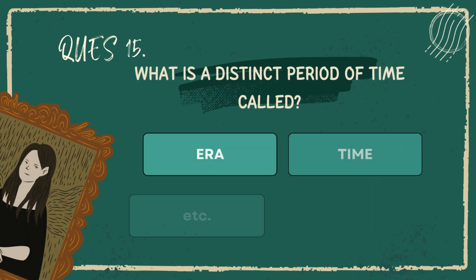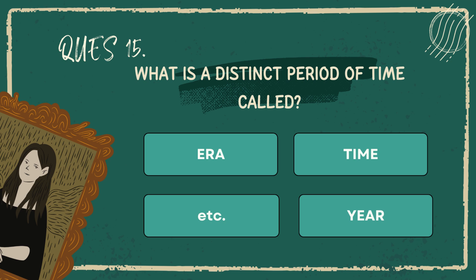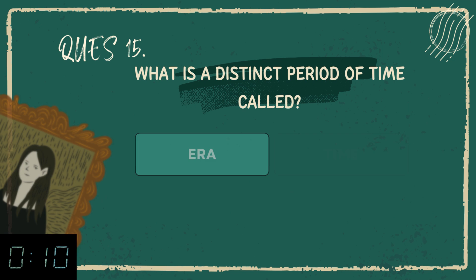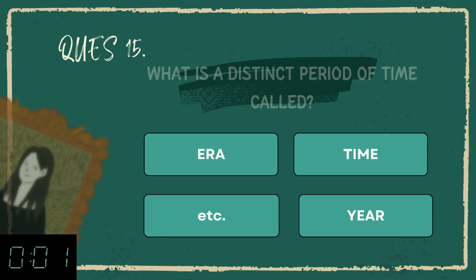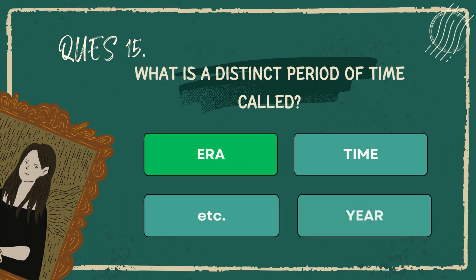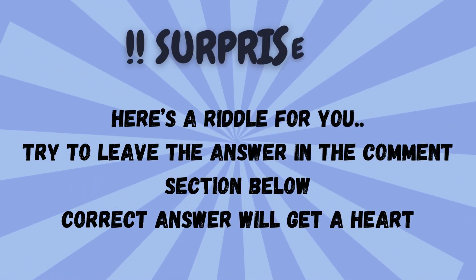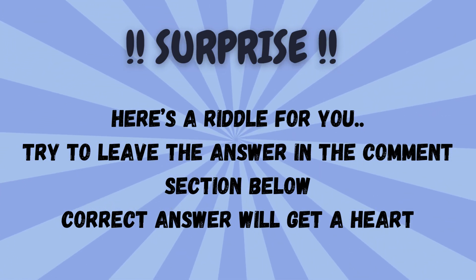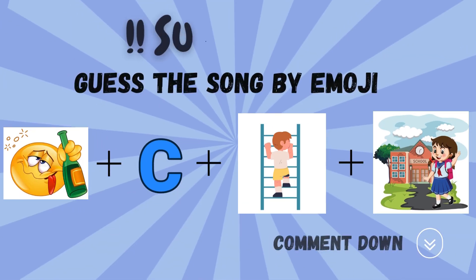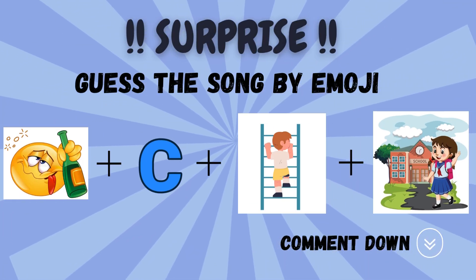What is a distinct period of time called? Era, time, etc., year. The answer is era.